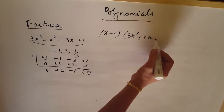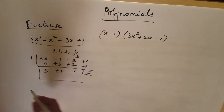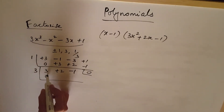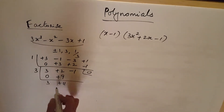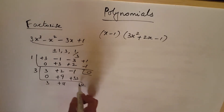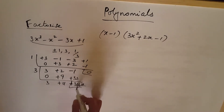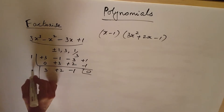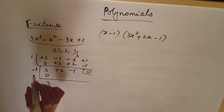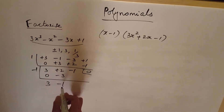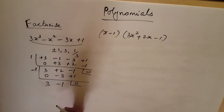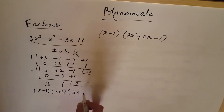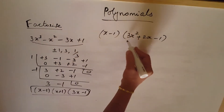The quotient is 3x squared plus 2x minus 1. Now trying minus 1: we get 3, minus 3, minus 1, remainder 0. We can also try 3 first: coefficients give 3, 9, 11, 33, remainder not 0. So we confirm minus 1 works. The factors are x minus 1, x plus 1, and 3x minus 1. This is the answer.